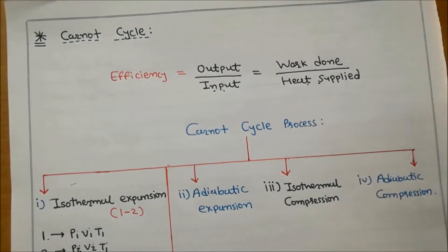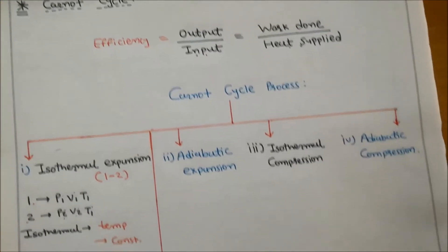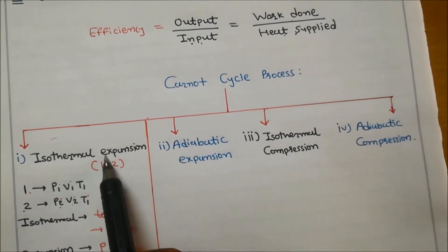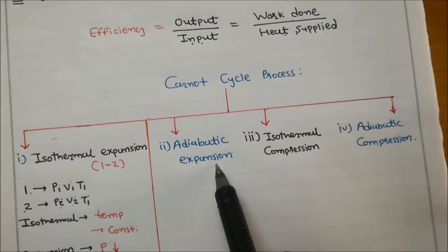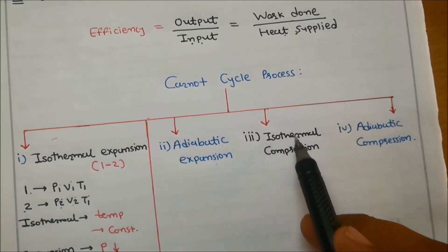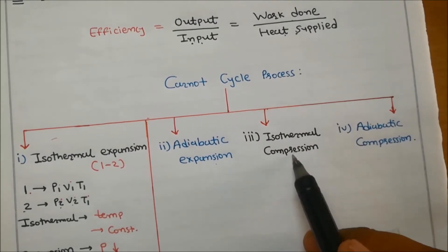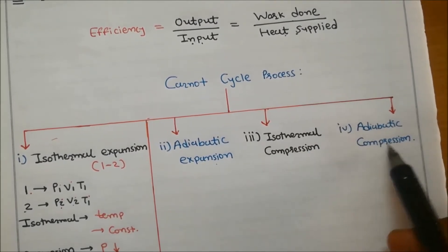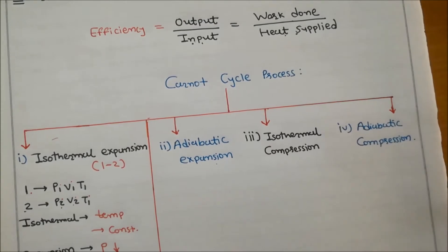The Carnot cycle consists of four processes in the following order: first, isothermal expansion; second, adiabatic expansion; third, isothermal compression; and fourth, adiabatic compression.